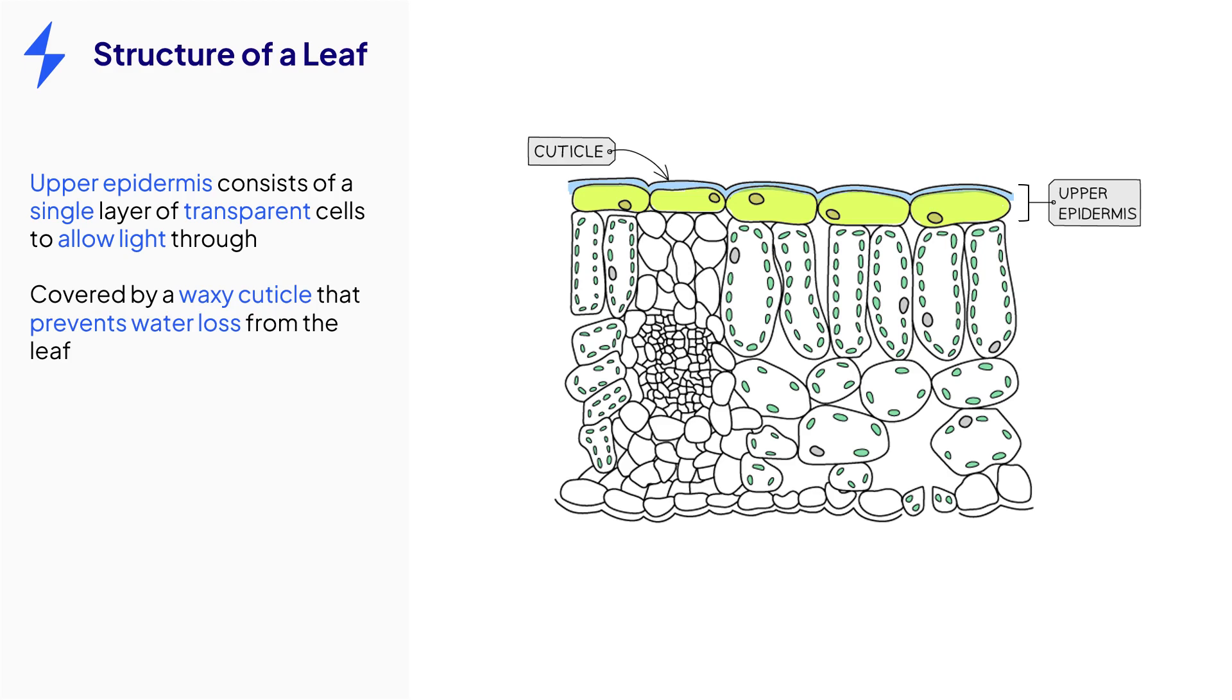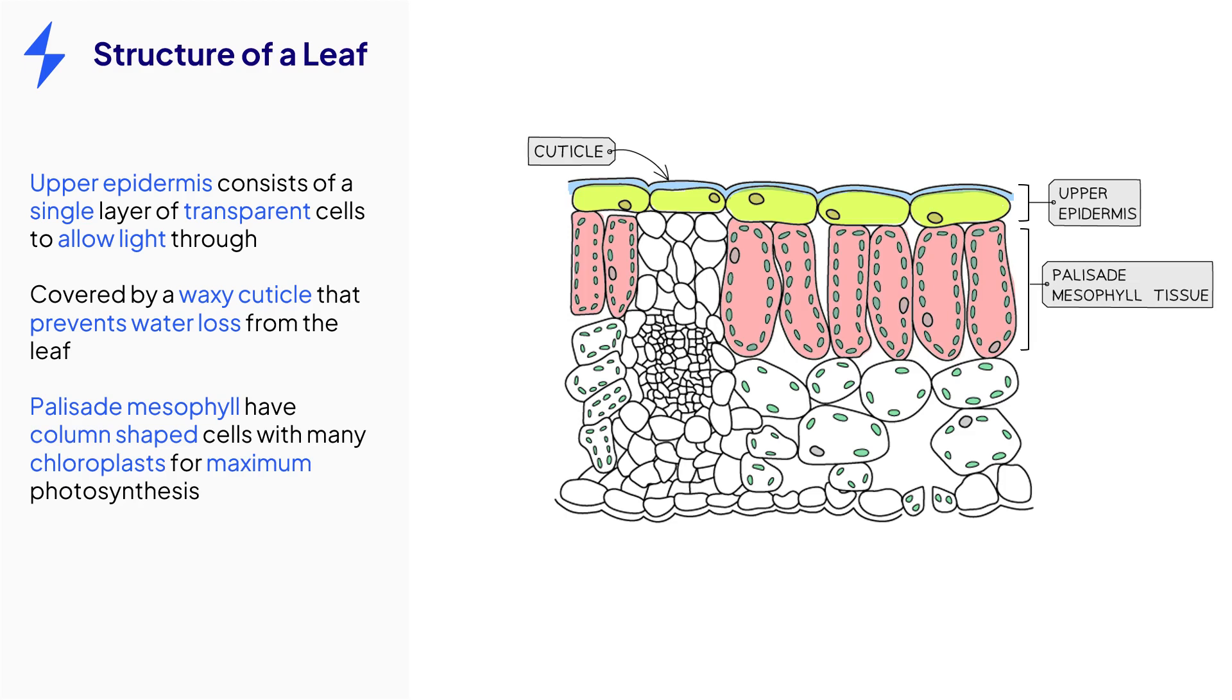This prevents water loss from the leaf through evaporation. The palisade mesophyll layer consists of tightly packed, column-shaped cells that contain many chloroplasts. This is the layer where most photosynthesis occurs in the leaf.